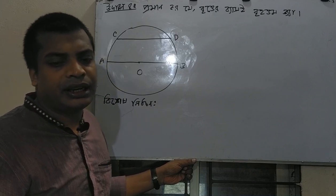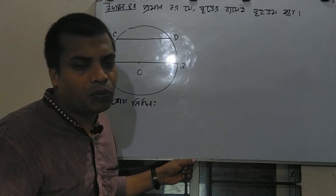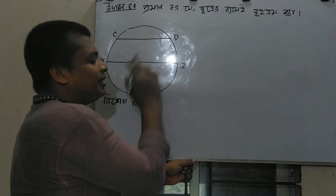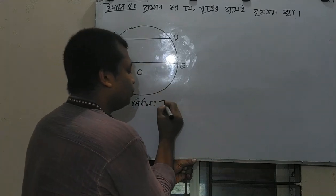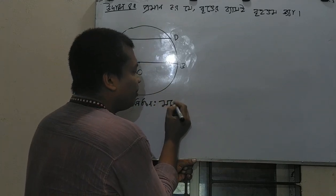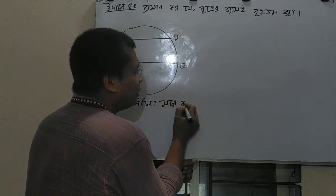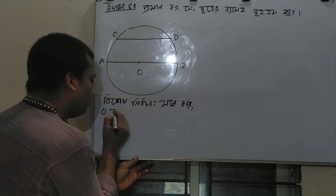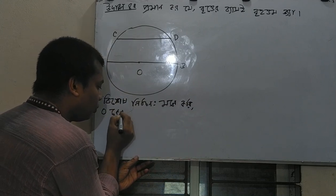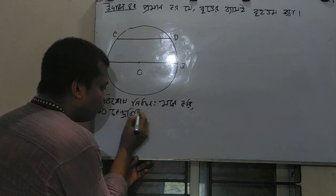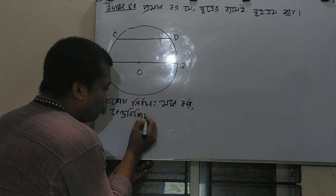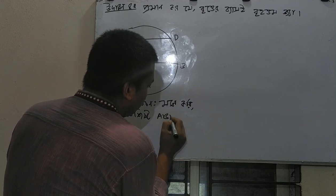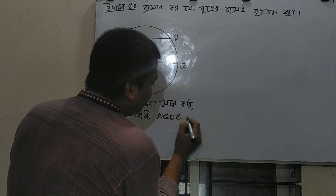Who will write that? 1,1 is called ABCD. I will say that ABCD. 2,1 is called ABCD.